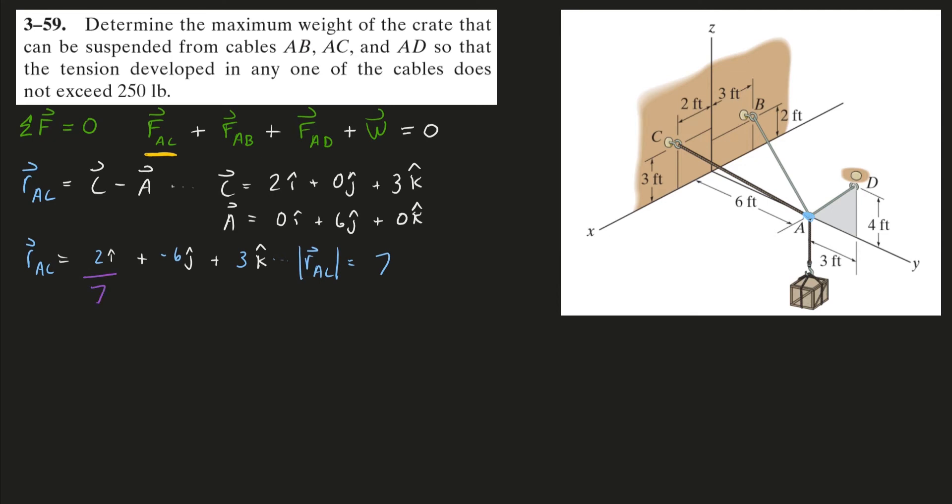I'm going to take the 7 and divide it into each component, as well as the magnitude of our position vector here. That will basically shrink our position vector down into a vector in the same direction, but just has a length of 1. That by definition is a unit vector, just a vector of length 1.